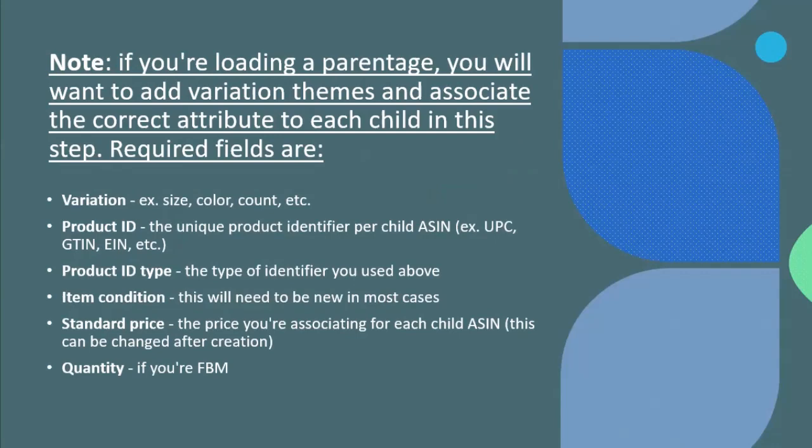If you are loading a parent listing, you will want to add a variations theme and associate the correct attribute to each child. If you have a product with variations, you will want to add size, color, count, etc., and identify each variation as a child.